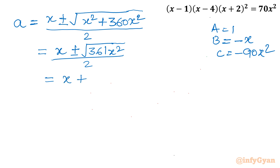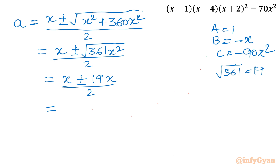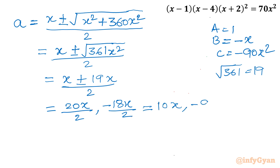So this becomes x ± 19x, divided by 2. Taking the plus sign: (x + 19x)/2 = 20x/2 = 10x. Taking the minus sign: (x − 19x)/2 = −18x/2 = −9x. So we have two values: a = 10x and a = −9x.